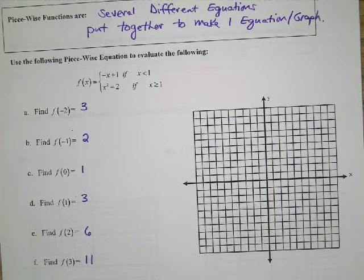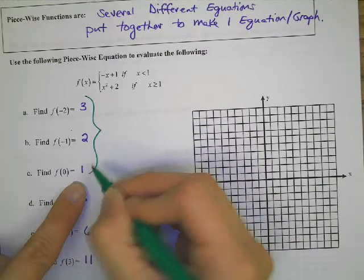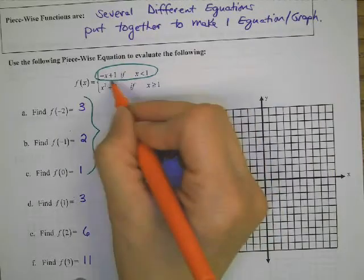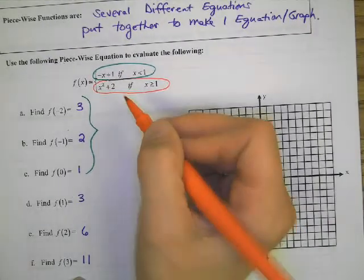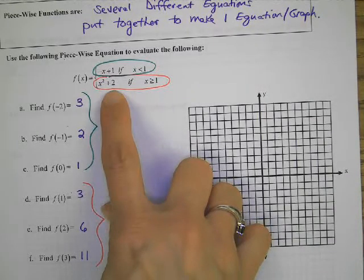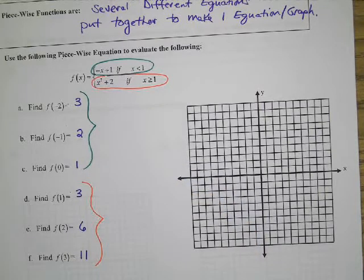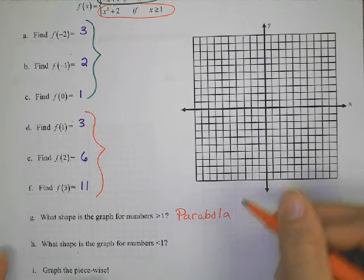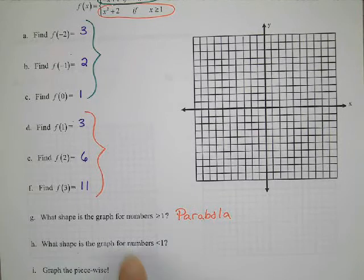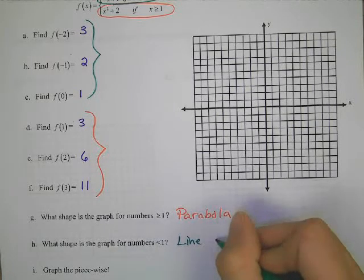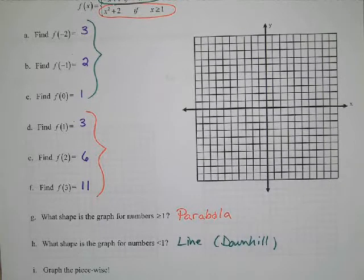So we've got two different sets. These top three numbers were evaluated in this top equation, and these next three down here were evaluated in the bottom equation. What is the shape of the graph for the numbers that are more than or equal to 1? This shape makes a parabola. And what shape was the graph for the numbers that were less than 1? That was a line — a downhill line, since the slope was negative.